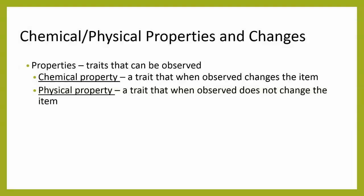Properties are traits that can be observed. A chemical property is a trait that, when we are observing it, changes the item. For example, if we are observing that an item is flammable, that means the item is on fire and therefore is changing. In contrast, physical properties are traits we can observe that do not change the item — for example, noticing that paper is smooth, white, and has black ink on it. Those things were observed but didn't change the paper itself. So with chemical properties, the item is undergoing a change; with physical properties, the item stays exactly the same.